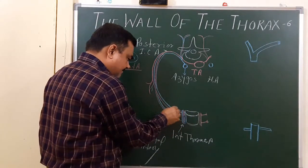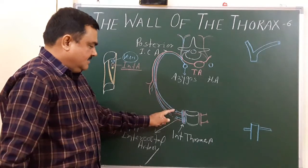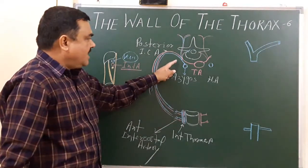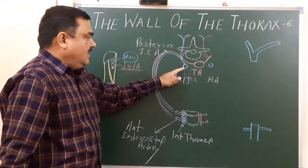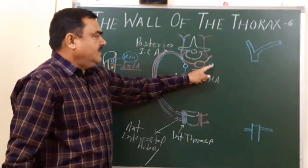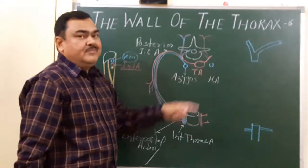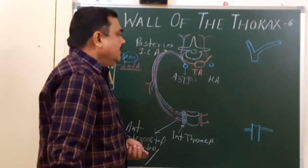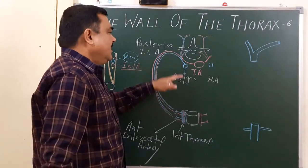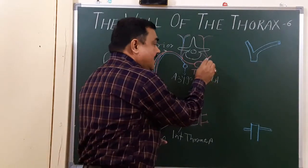Each space has two anterior intercostal veins. Here is the posterior intercostal vein and this is the anterior intercostal vein. The posterior intercostal vein on the right side mostly drains into the azygous vein, and on the left side it drains into the hemi-azygous and accessory hemi-azygous vein, and also into the brachiocephalic vein. We will discuss the posterior intercostal vein first.